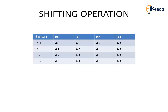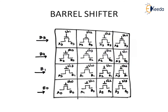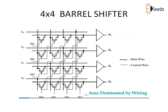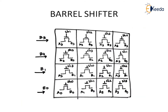So this is all about the shifting operation. With these basics, we shall move on to the structure of the Barrel Shifter. This is a 4x4 barrel shifter. There are two ways to represent it — a more complex diagram showing A3, A2, A1, A0 lines with SH0 through SH3, and a simpler structure. Both diagrams are the same — I will show you how they correspond.